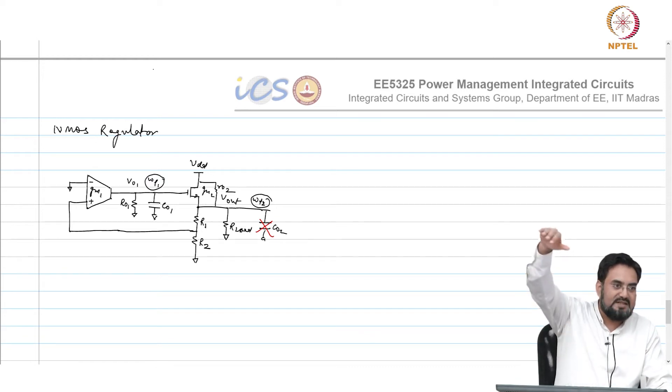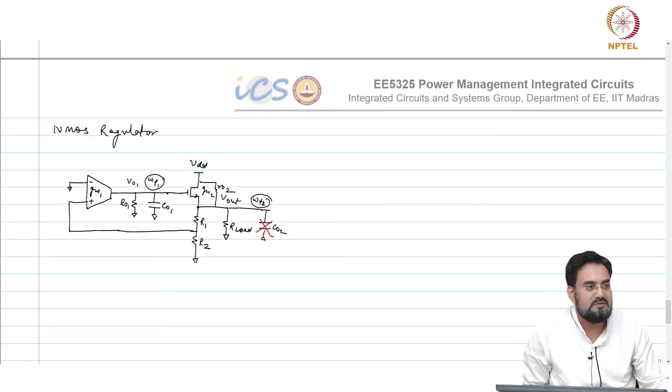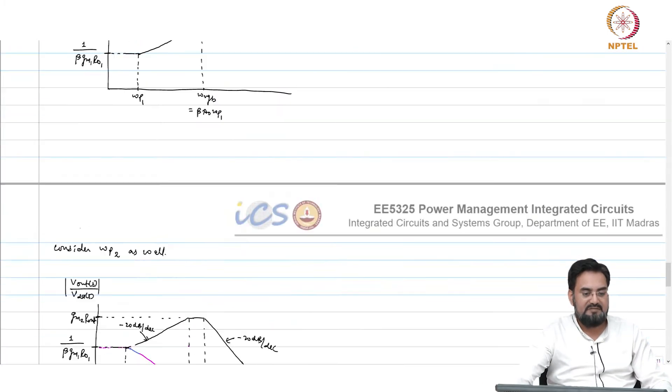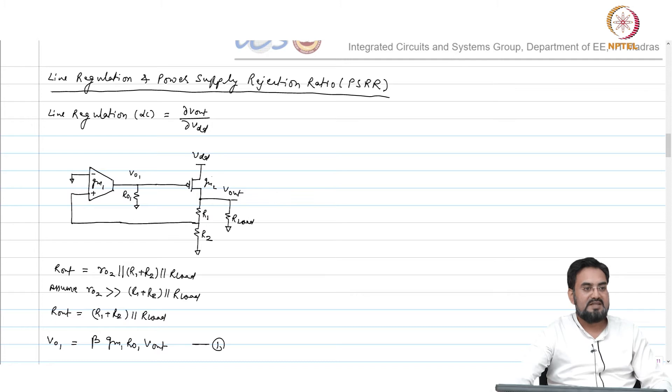The zero which was causing and your output was amplifying. Now if at high frequency this is grounded, even if this is grounded, whatever change is happening here is not getting amplified. It will only appear through this R_o2, that is it. Because output will not have a component of gate to drain, it will only have VGS, it is a source follower. It will have a very weak component of V_dd appearing at the output.